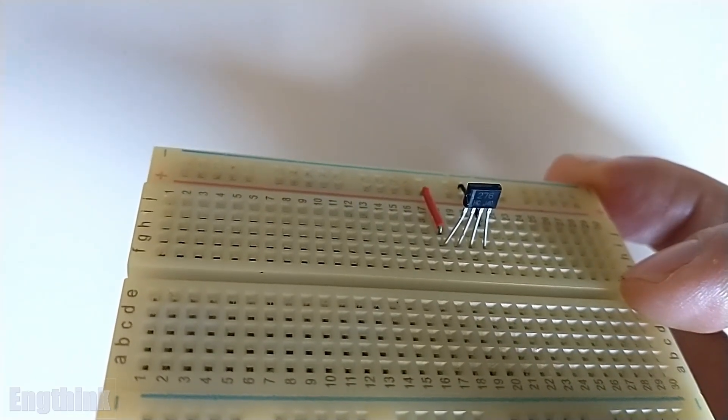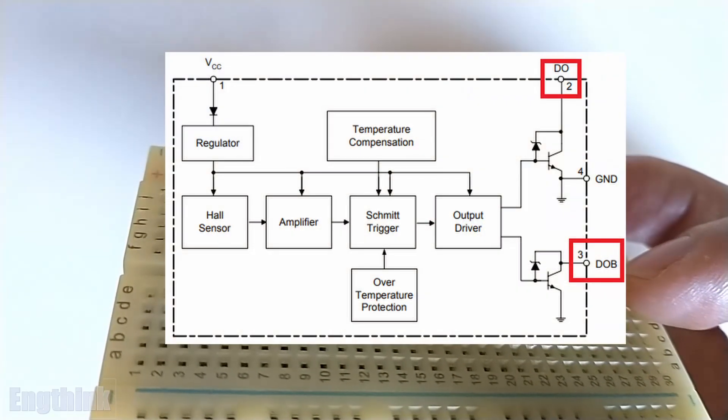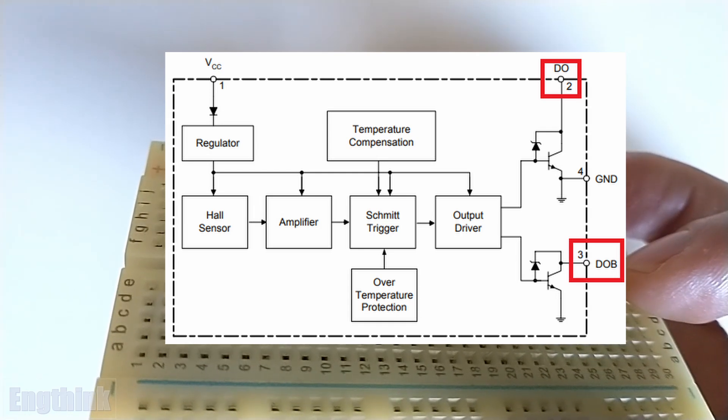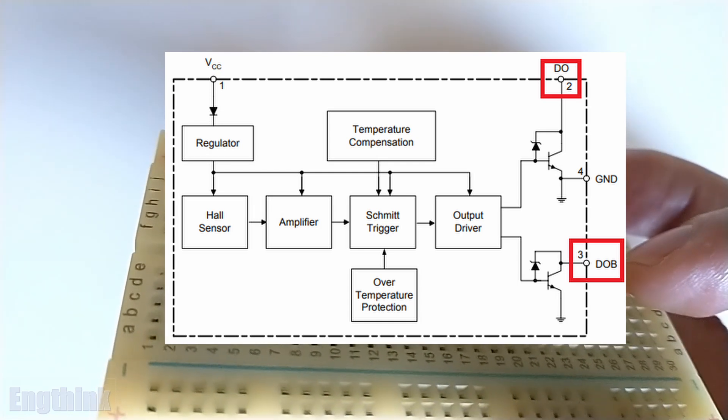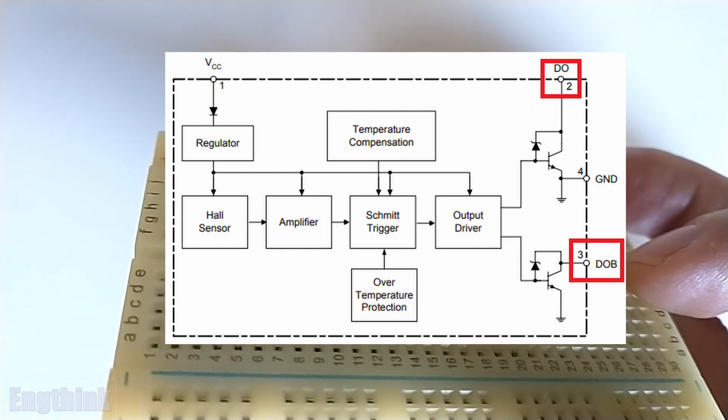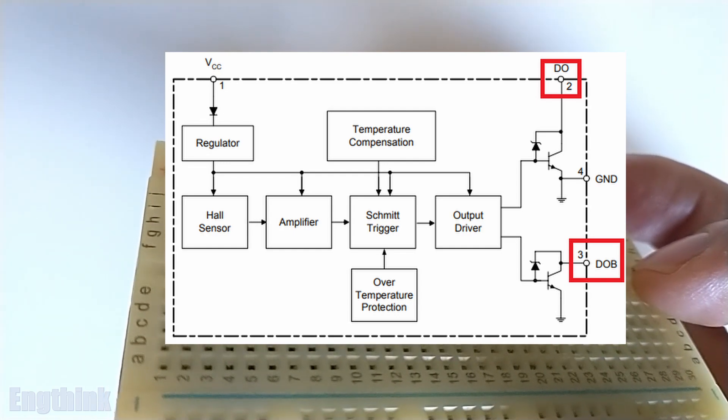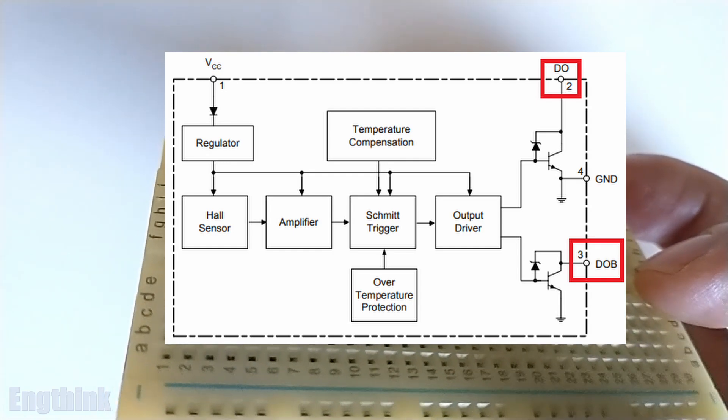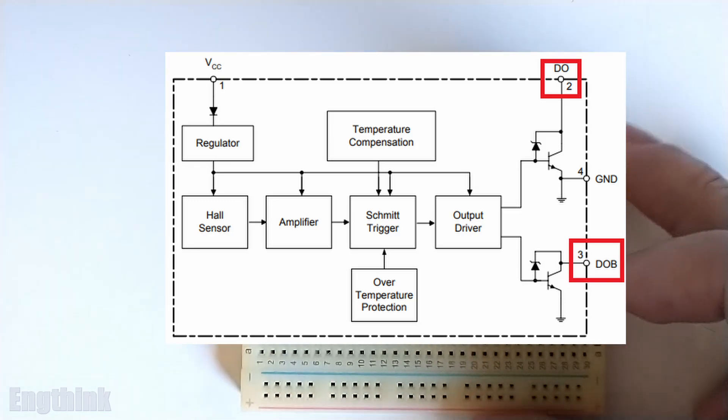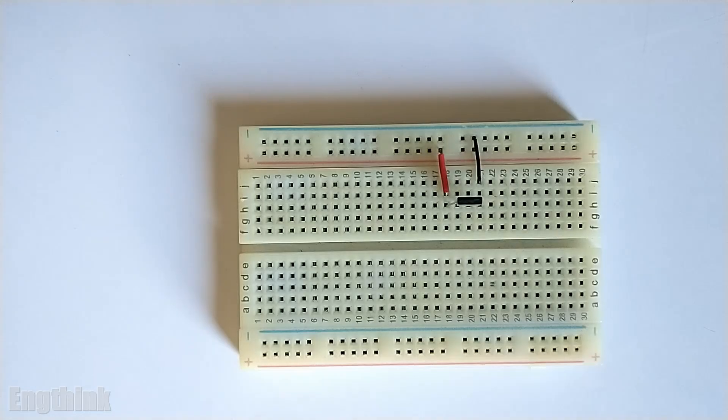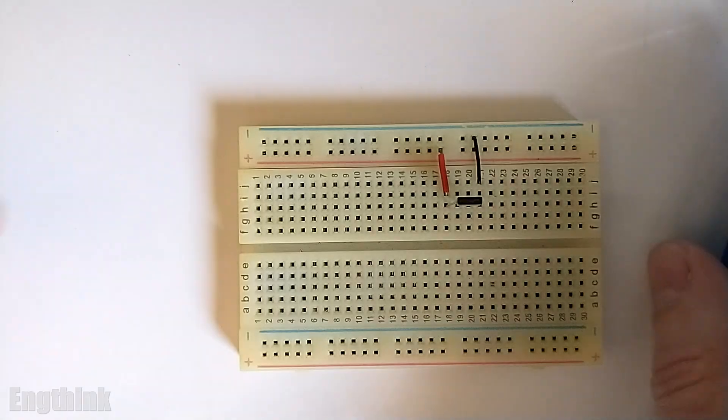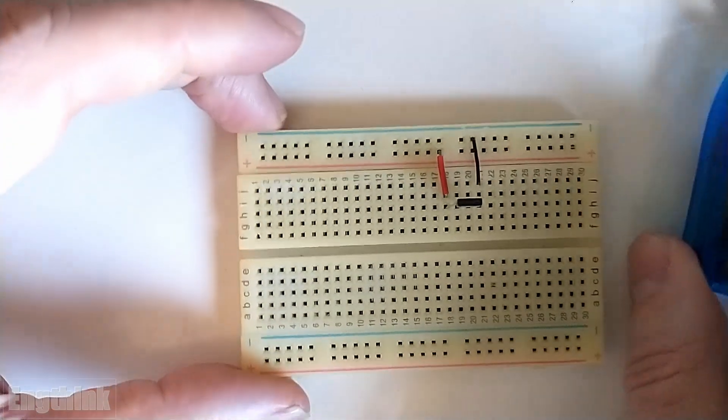As we can see, the datasheet also provides a block diagram to see how is the functionality of each part of the sensor. For both outputs, it's easy and clear to see that the configuration of the transistor in the output is different for each one. One thing that is very clear is that both outputs are digital outputs, means that only two states we will have in the outputs.